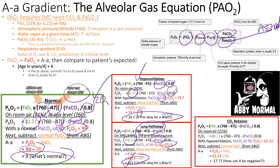However, the A-a gradient is not applicable to CO2 retainers. If someone chronically sits at a PaCO2 of 70 on room air, you get a negative gradient of −17 — which is meaningless. So the A-a gradient is not useful in that population.